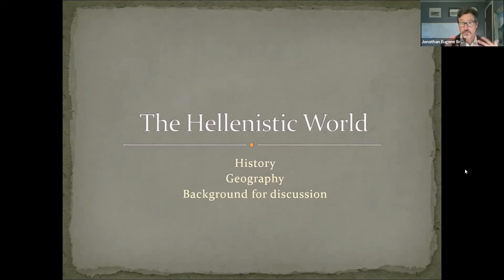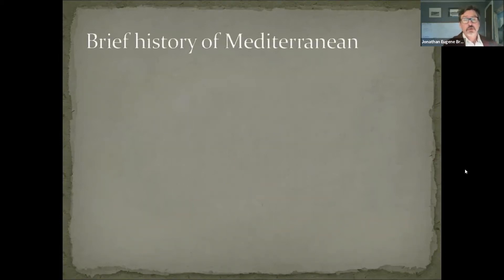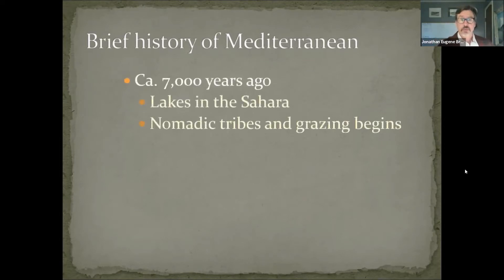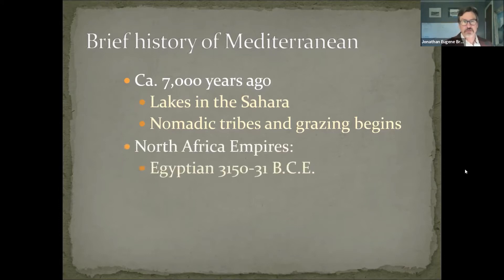I'm going to give you this basic, quick background in history and geography so that we have a good fundamental context for our understanding of the rise of Islam. The Mediterranean was the site of many civilizations going back thousands of years. There were, in fact, lakes in the Sahara — it was a very different topography than we have today, but the beginning of grazing actually led to the desertification of this territory.